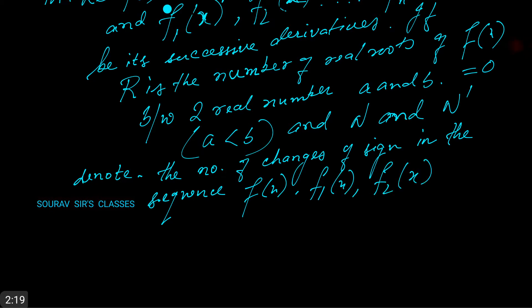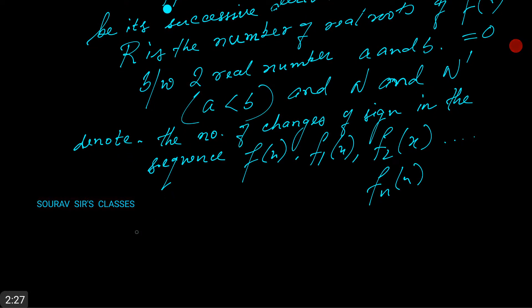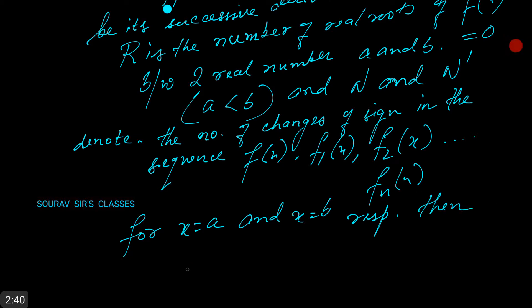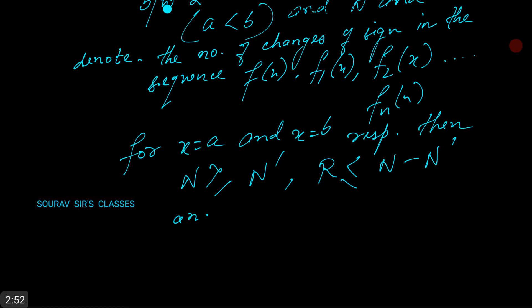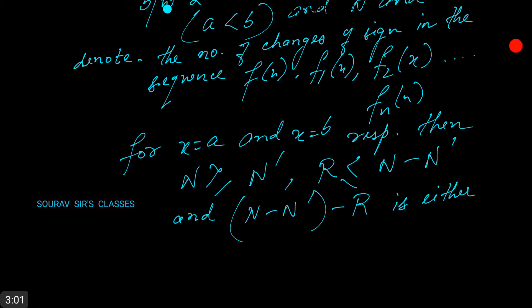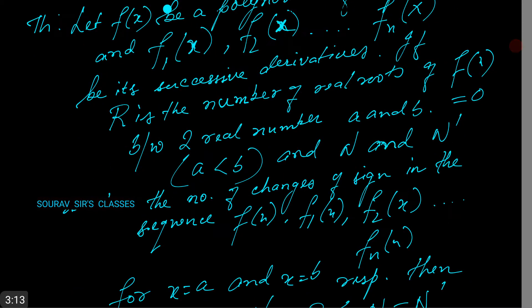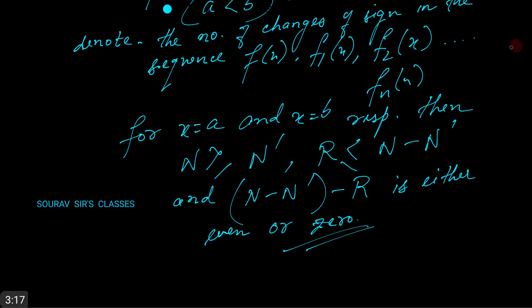...f2(x), and so on up till fn(x), for x equals a and x equals b respectively, then r is less than or equal to n minus n-dash, and n minus n-dash minus r is either even or zero. Quite a long statement of the theorem. Let's now jump to a question.